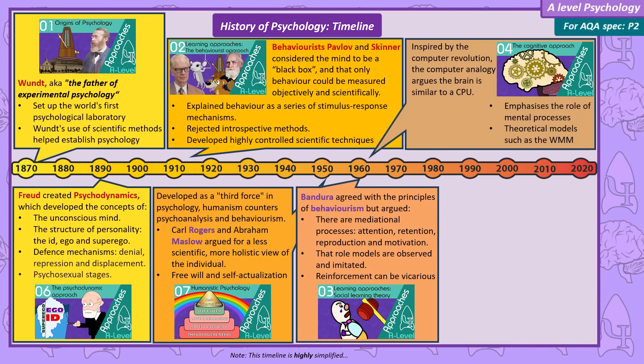In response to the computer revolution, an area of psychology developed called cognitive psychology. These psychologists viewed the mind and brain as similar to a computer. The computer has inputs — keyboard and mouse — and outputs — speaker and screen. The brain has inputs — our senses — and outputs — our voice and body movement. The computer has hardware, the CPU, and software, the programs that run on the CPU. Cognitive psychologists say the CPU is just like the biological hardware of the brain, and information is processed in the brain like software runs on a CPU.